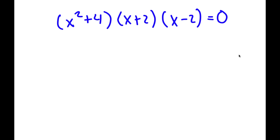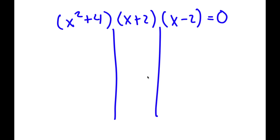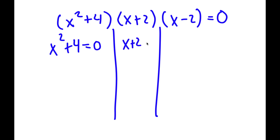So now this gives me three equations to work with. I have x squared plus 4 is equal to 0. I have x plus 2 is equal to 0. And I have x minus 2 is equal to 0.